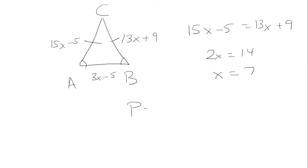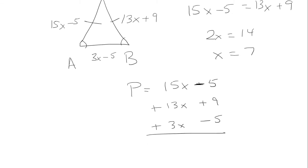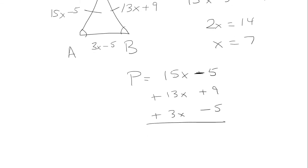The perimeter is adding up all three sides of the triangle, so we have 15x minus 5 plus 13x plus 9 plus 3x minus 5. Now we add: 15x plus 13x is 28x, plus 3x is 31x.